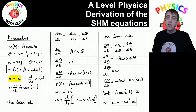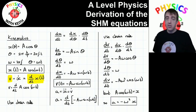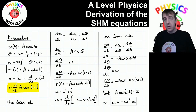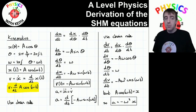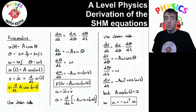Velocity is the first derivative of displacement — dx/dt — where x is a function of t. We know that function of t because we wrote it within that rectangle. The velocity is therefore d/dt of A cos(ωt). Now, ωt is a function of t, and cos(ωt) is therefore a function of a function of t, so we have to use the chain rule.